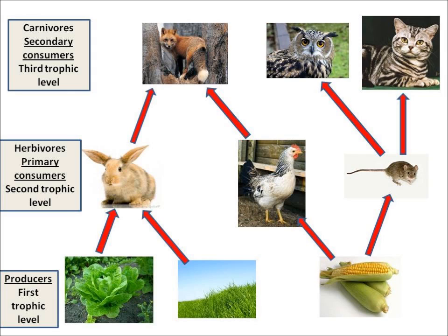We have different levels of my food chain. The bottom level are producers — they're plants, and they make their energy by photosynthesis using sunlight. The next level up are primary consumers, which eat the producers. Above them are secondary consumers, which eat the primary consumers. The red arrows in the diagram show the flow of energy — energy always flows upwards from what is being eaten to what is eating it.